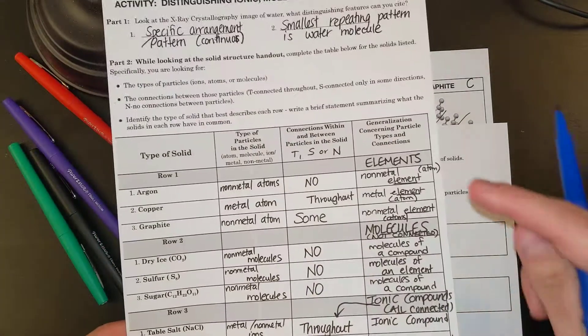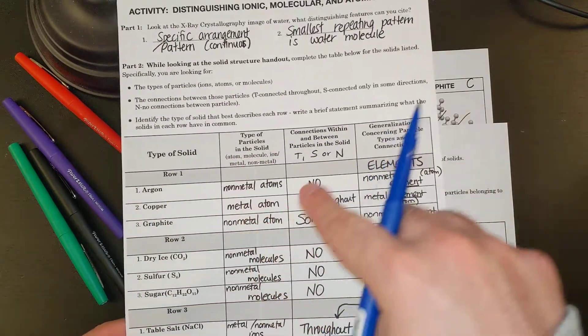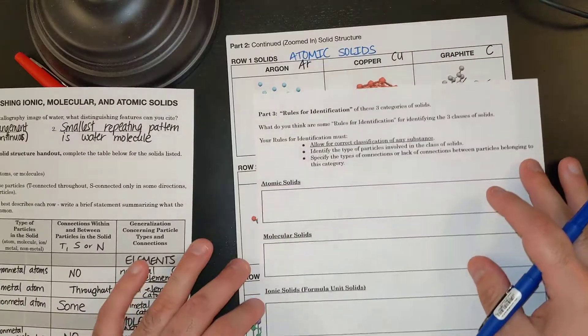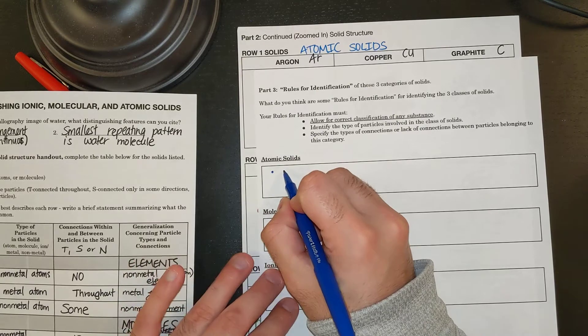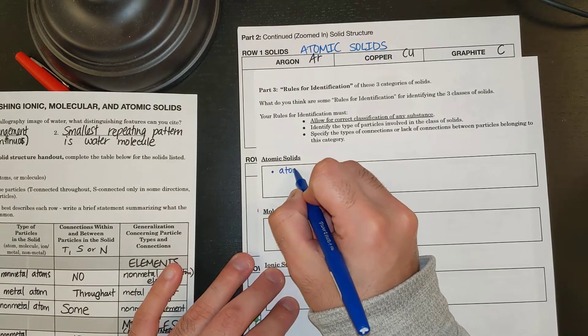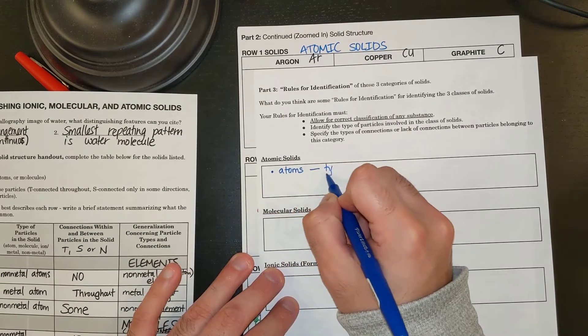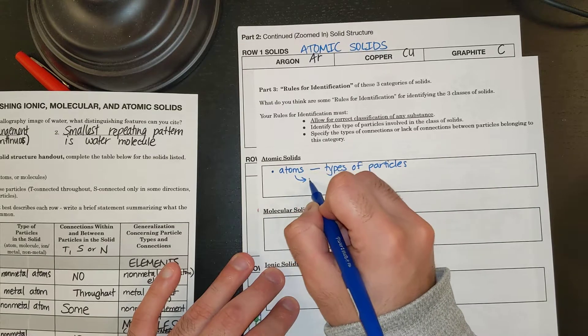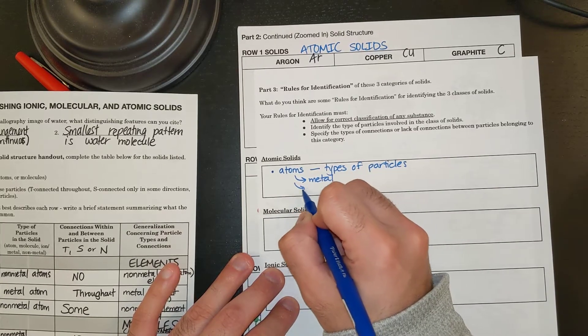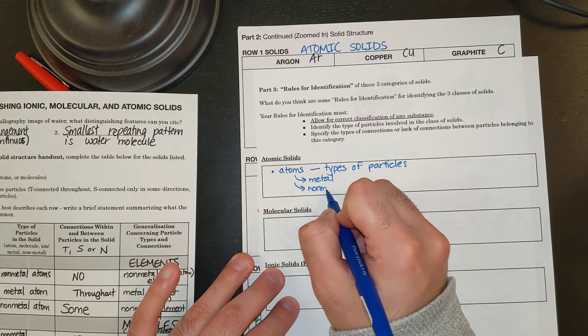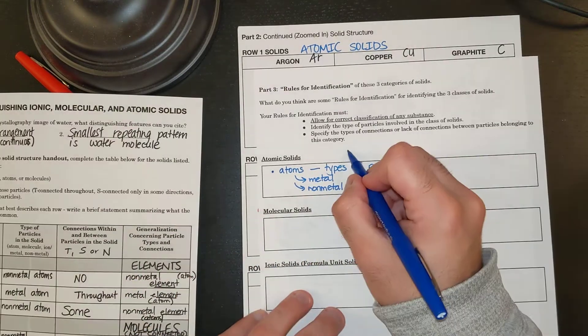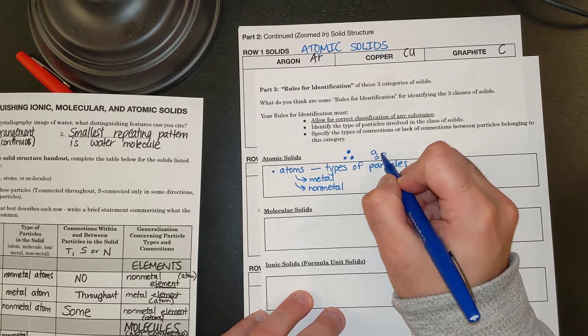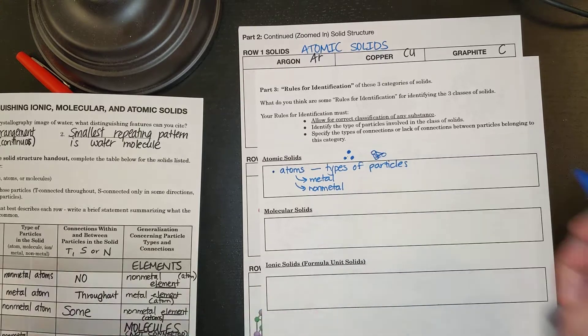So let's go with atomic solids. It looks like our row one atomic solids were right here. They could be metals or non-metals, but they were atoms. So atomic solids, let's say the atoms are the types of particles involved. And those atoms could be metal or non-metal. And that's something like atoms, or I could have atoms that are connected to each other.